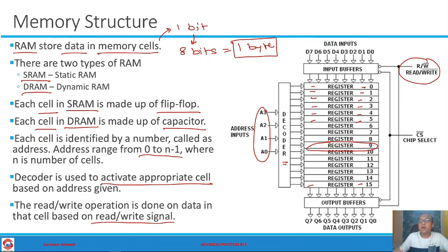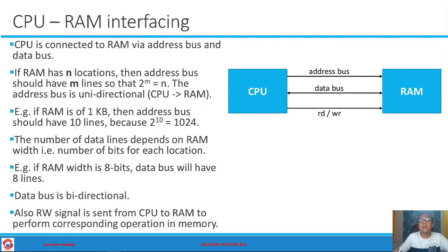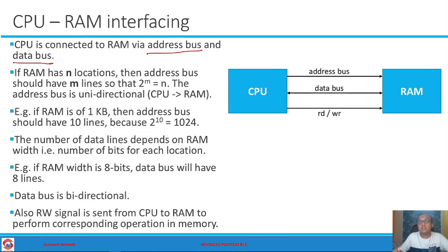How is the address given and how is data written or read? For that you need to understand how CPU and RAM are connected together. It is very common that RAM is connected via an address bus and a data bus. A bus is simply a set of wires. The address bus is a set of wires carrying addresses from CPU to RAM, while the data bus is a set of wires carrying data from CPU to RAM or from RAM to CPU.